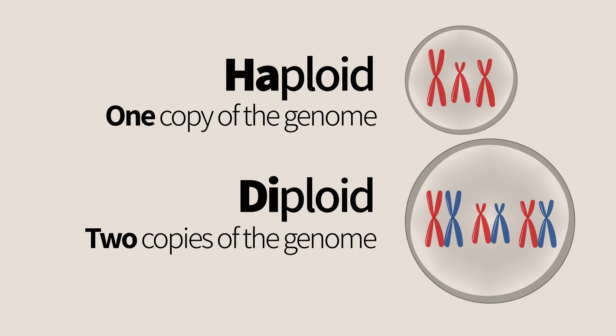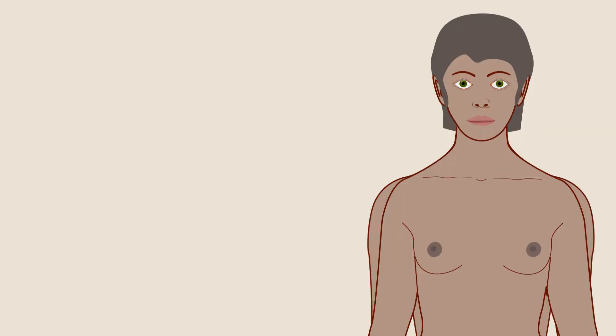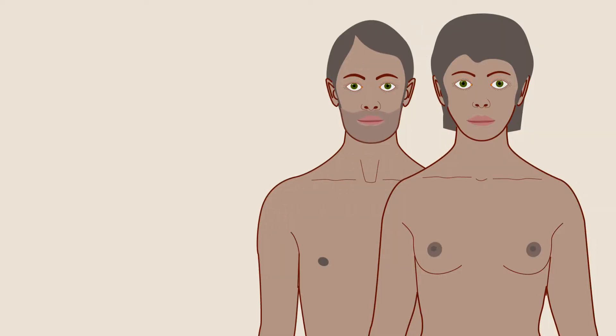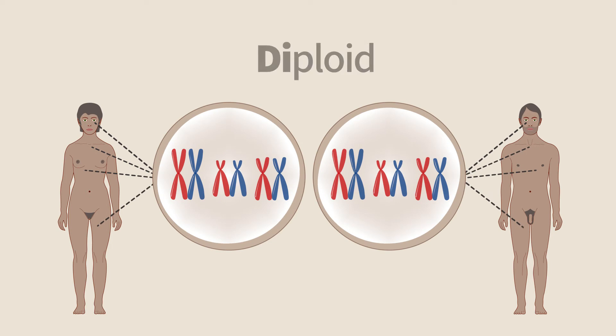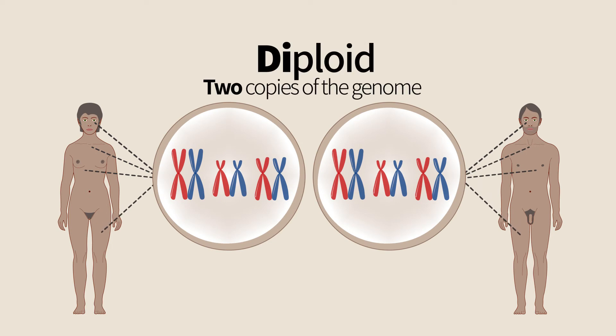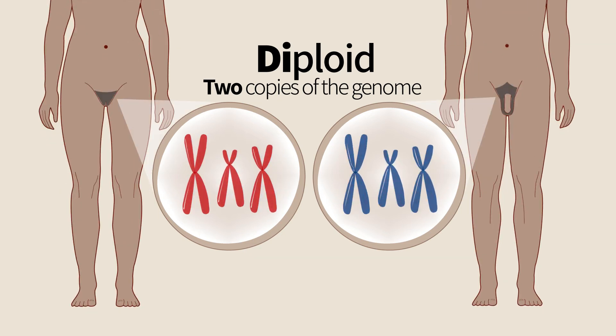These are highly important terms that will serve us extensively throughout the course, and it is important to understand and remember them. In most multicellular organisms, the main stage is diploid. For example, each cell of our body is diploid and has two copies of the genome.